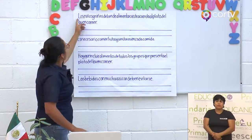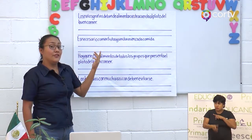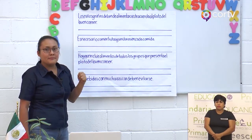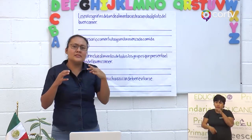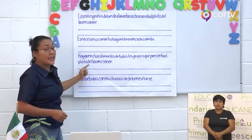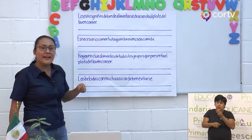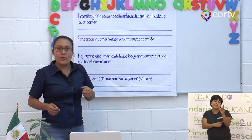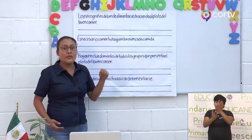Vamos a leerlas. 'Los niños y niñas deben alimentarse de acuerdo al plato del buen comer.' Vamos a seguir leyendo la que continúa: 'Es necesario comer frutas y verduras en cada comida.' Me cuesta un poco de trabajo, se me acaba el aire, y además tú no puedes entender claramente la idea. Hace falta espacio para que nosotros podamos entender el significado de la oración y lo que el expositor nos quiere decir. Así que vamos a ir dividiendo estas oraciones.